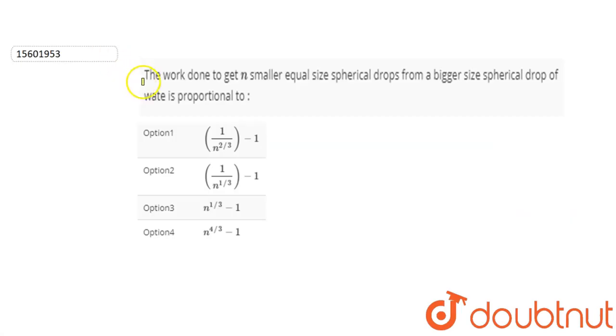Hello friends, we have a question. The work done to get n smaller equal size spherical drops from a bigger spherical drop is proportional to what? We need to find out.